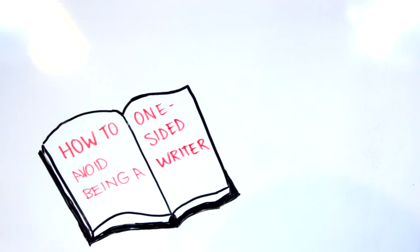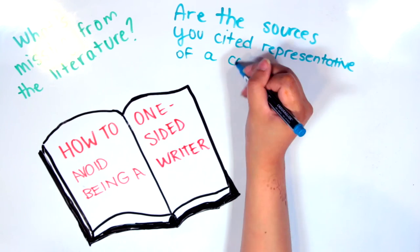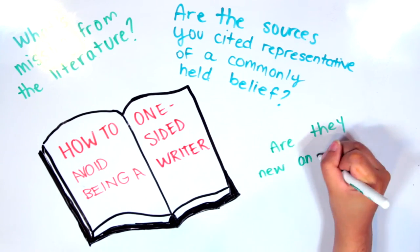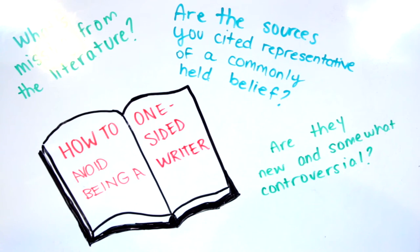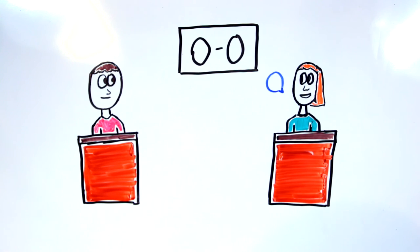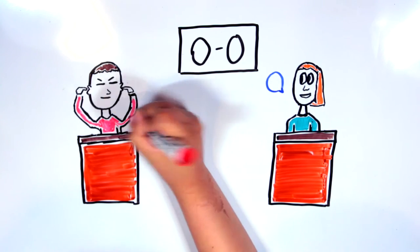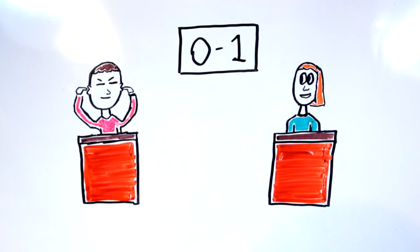When forming your argument, it's important not to be one-sided. What's missing from the literature? Are the sources you cited representative of a commonly held belief? Or are they new and somewhat controversial? Make sure you consider other possible outcomes and conclusions on your topic, or it will look like you have only research sources that back up your argument. You don't have to refute counter-arguments, but they should be addressed. Ignoring them weakens your paper, giving the impression that you're a lazy thinker.